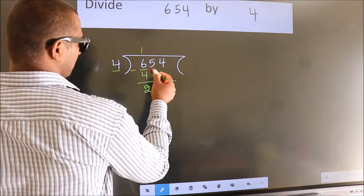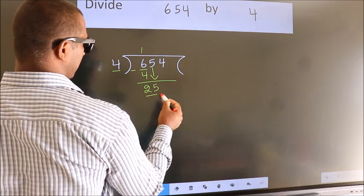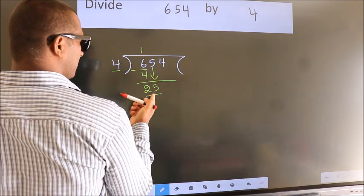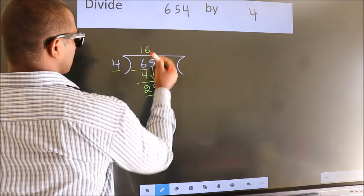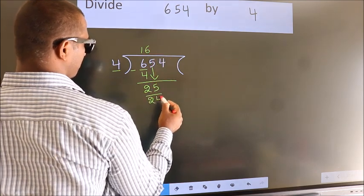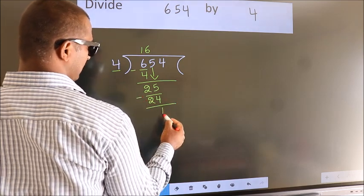After this, bring down the next number. 5 down, so 25. A number close to 25 in the 4 times table is 4 times 6, which is 24. Now we subtract and get 1.